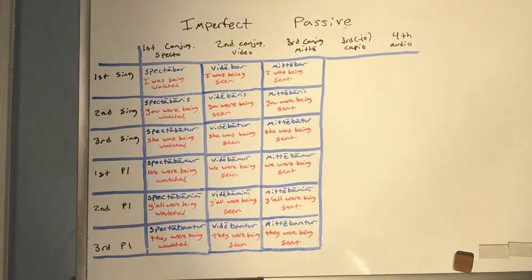Third conjugation imperfect passive with MITTO: MITTEBAR (I was being sent), MITTEBARIS (you were being sent), MITTEBATUR (she was being sent), MITTEBAMUR (we were being sent), MITTEBAMINI (y'all were being sent), MITTEBANTUR (they were being sent).